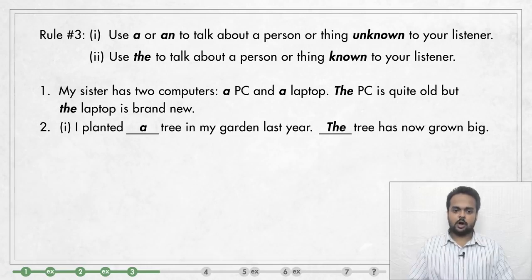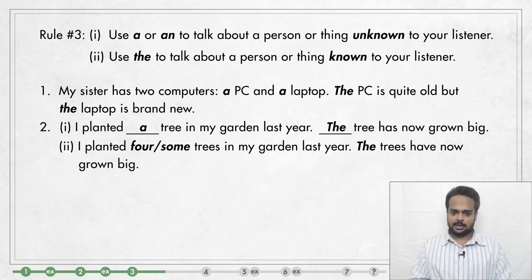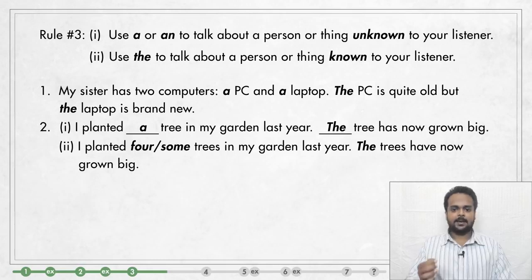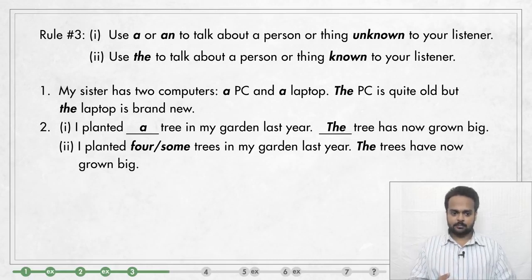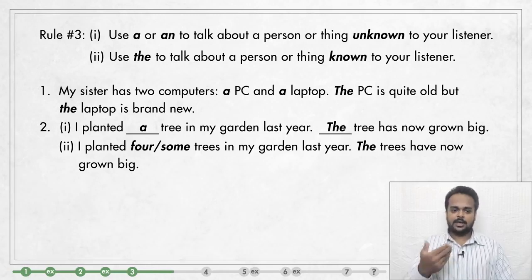This was easy because we were talking about one tree. But what if I planted two, three, or four trees? You know that we cannot use A or AN with plurals, but we can mention the exact number: I planted four trees in my garden last year. Or if I don't want to say the number, I can say: I planted some trees. And then: the trees have now grown big. THE simply means that you know which trees I'm talking about. In both examples, we first introduce something with A, AN, or SOME, and then we say THE, because the listener knows about them.